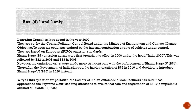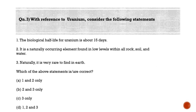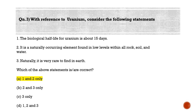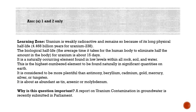Now we'll move to the last question for the day. With reference to uranium, consider the following statements. Statement 1: the biological half-life of uranium is about 15 days. Statement 2: it is a naturally occurring element found in low levels within all rock, soil, and water. Statement 3: naturally, it is very rare to find on Earth. Which of the above statements is/are correct? Option A: one and two only, Option B: two and three only, Option C: three only, Option D: one, two, and three. The correct answer is Option A — one and two only.